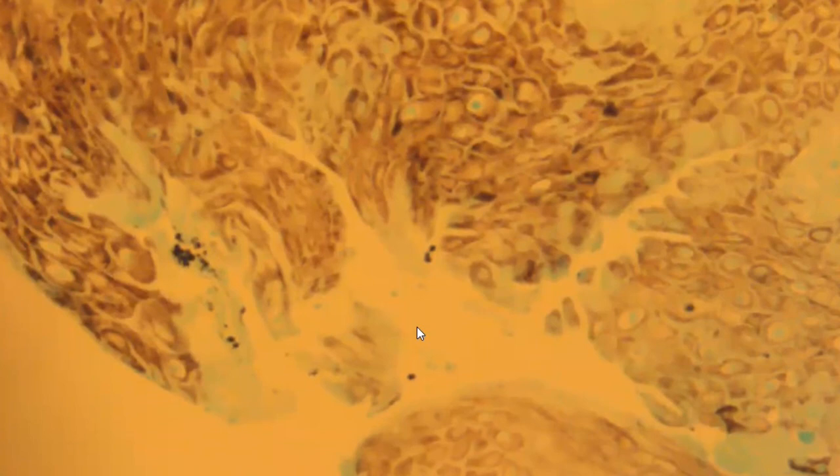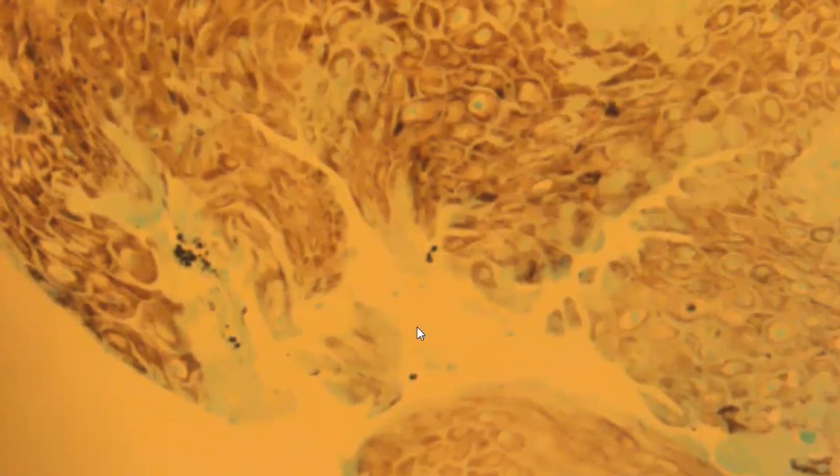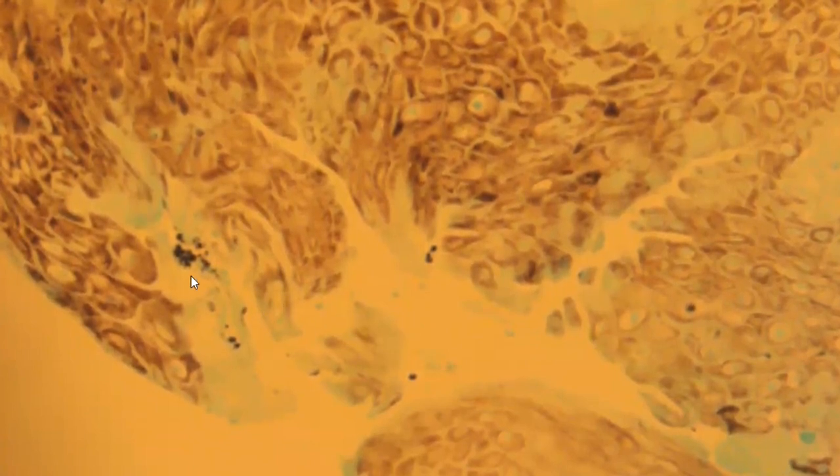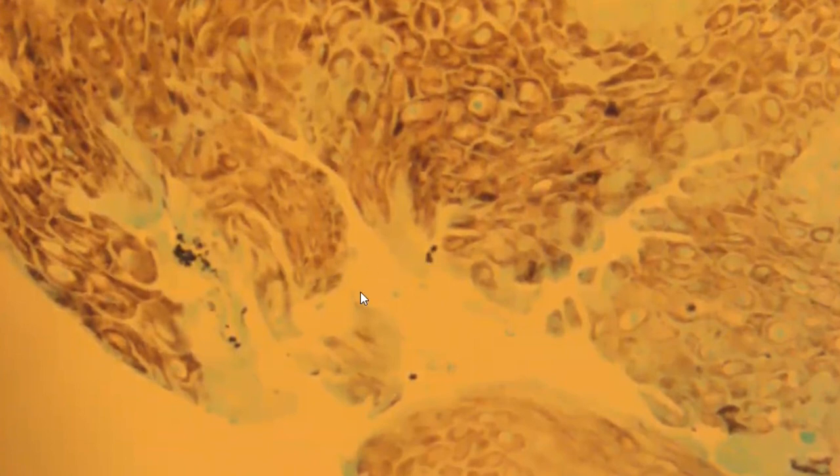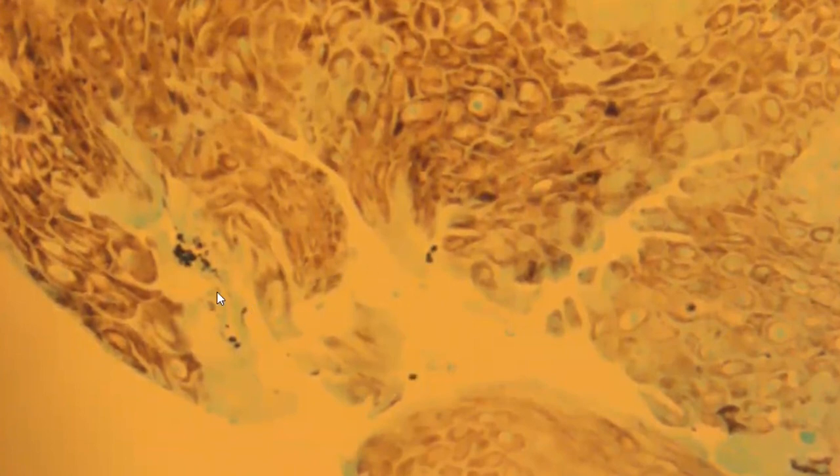This is the GMS stain. We do the PASD and the GMS, sometimes it's evident on one and not the other. You can see in this the busy area which is the yeast cell and these two cells also yeast cells which are evident here. This is how we diagnose esophageal candidiasis. Please like and subscribe to the channel, thank you.